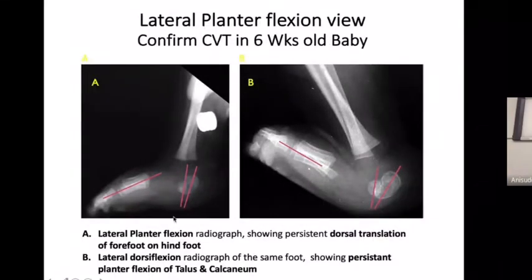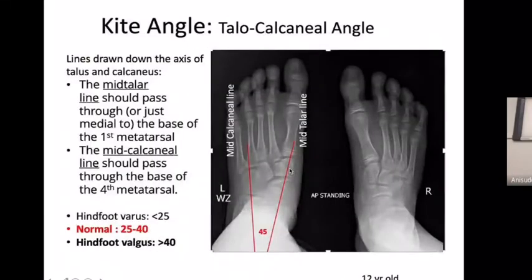The lateral plantar flexion radiograph shows persistent dorsal translation of the forefoot and hindfoot. The lateral dorsiflexion radiograph of the same foot shows persistent plantar flexion of the talus and calcaneum. This indicates irreducibility of the talonavicular joint, which is dorsolaterally dislocated.